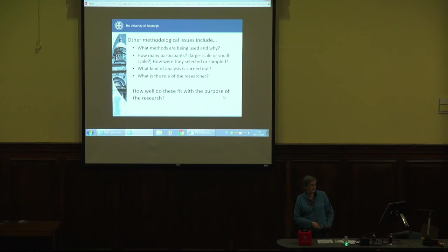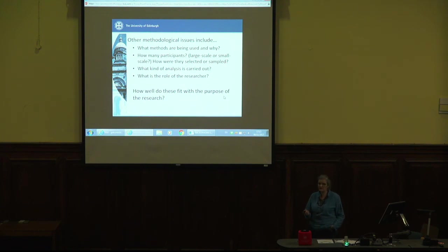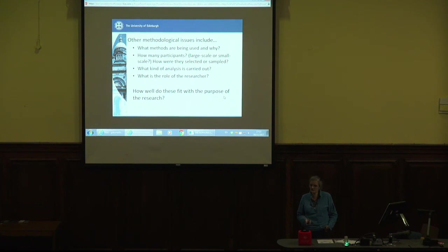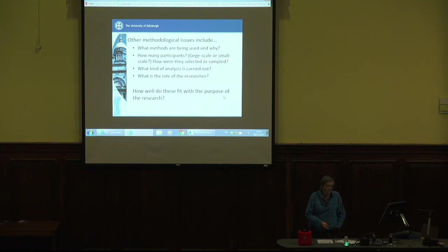The kinds of methodological issues — especially if you have a paper that isn't clearly stating its research design — you can think of research design as a way in which people answer methodological questions. Methodological questions are just questions about decisions you make about how you use your methods, who you use them with, how you select people, how you analyze the data, and what your relationship to the data is. So the sorts of things you should be thinking about — remember we're still in section one — are what methods are being used and why.